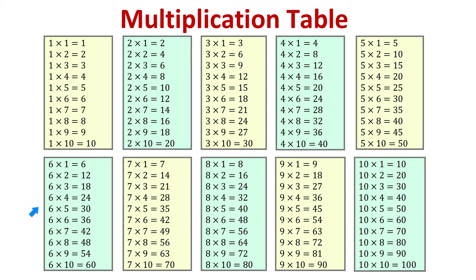When multiplying by 6, also notice that each time 6 is multiplied by an even number, the last digit in the product is the same as this number. So 6 times 2 is 12, and 12 ends in 2. 6 times 4 is 24, and 24 ends in 4.